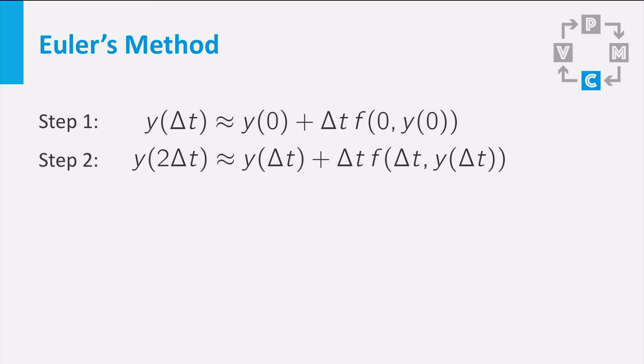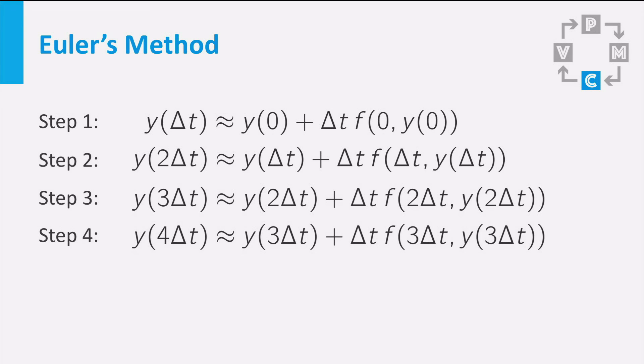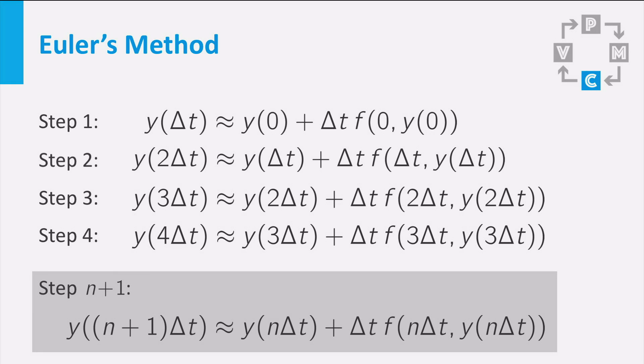You can continue doing steps forward in time in the same manner. The third step of Euler's method would become this approximation, the fourth step like this, and if you continue, a general step of Euler's method would look like this. The value of y after n plus 1 time steps of size delta t is approximately equal to y after n steps of delta t plus delta t times the value of the right hand side function after n steps of delta t.